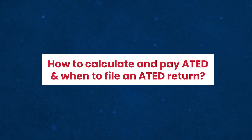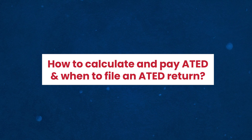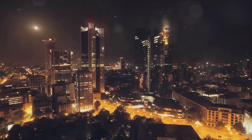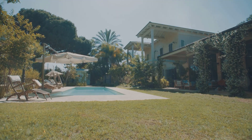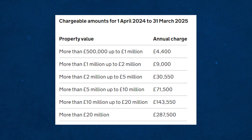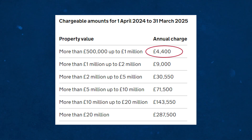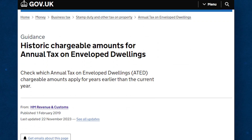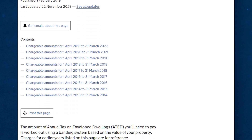How to calculate and pay ATED, and when to file an ATED return? Once you have the value of your property, you can use the valuation bands to calculate the amount of tax you need to pay. The valuation bands are ranges of property values that correspond to different rates of tax. For example, for the tax year 2024–2025, the lowest band is £500,001 to £1,000,000 and the annual charge for that band is £4,400. The highest band is over £20,000,000 and the annual charge for that band is £287,500. You can find the full list of valuation bands and annual charges for each chargeable period on the HMRC website.